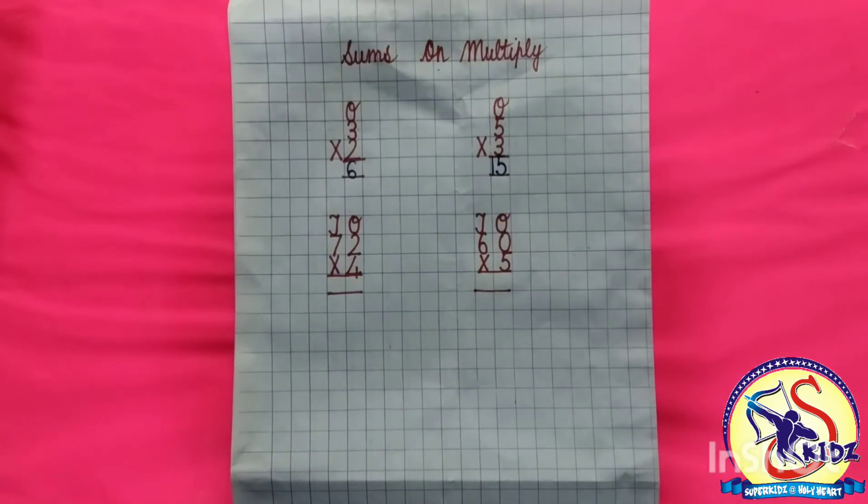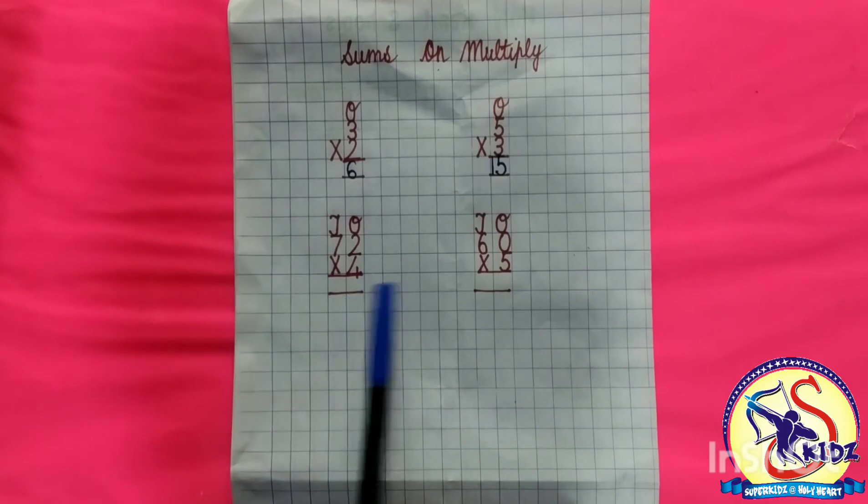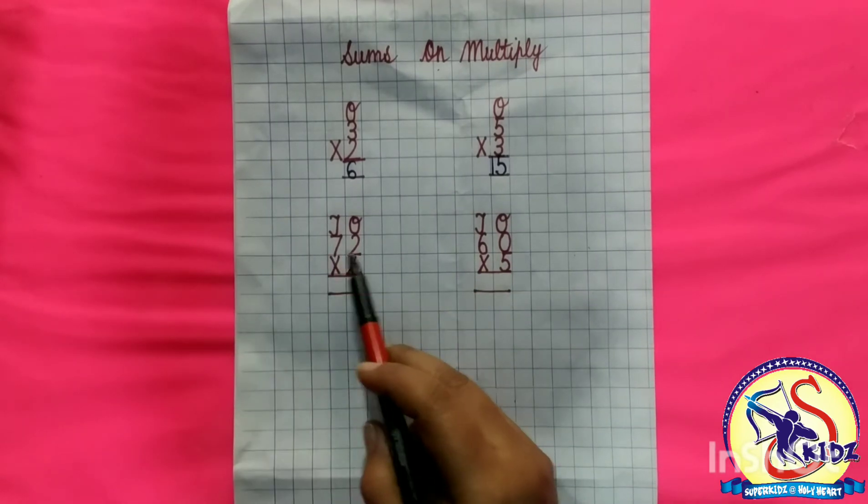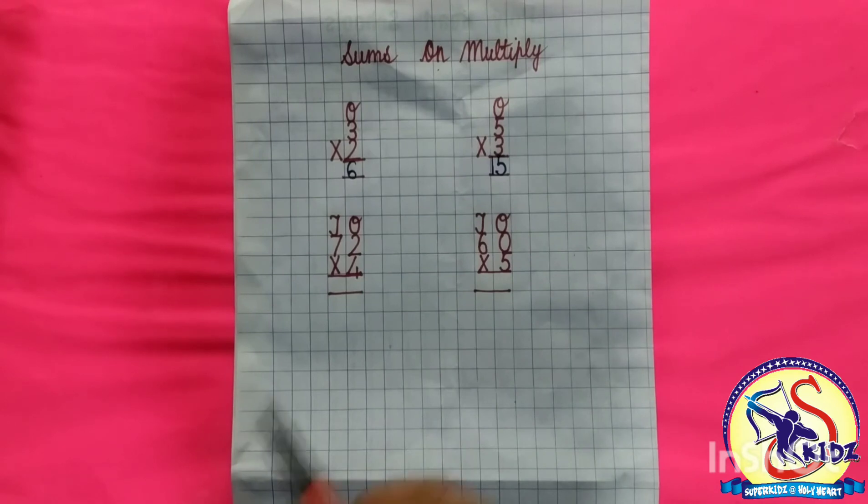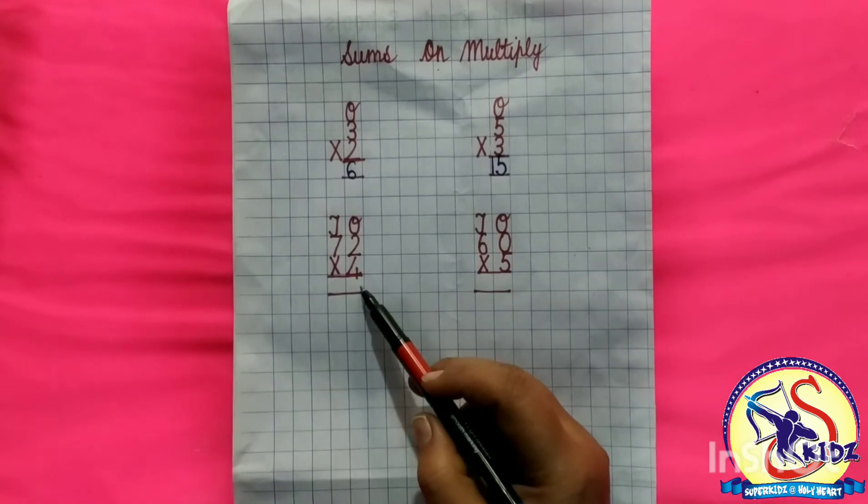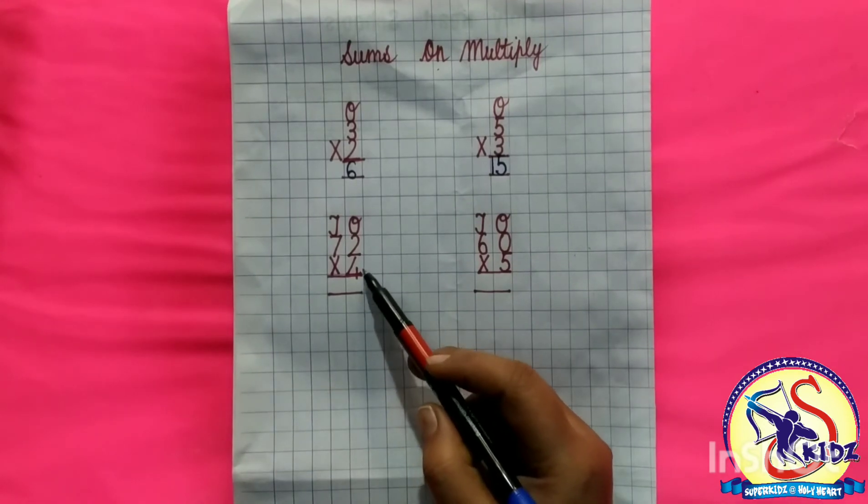Now we are going to do multiplication with double digit numbers. Here we have taken two numbers, 72, with sign of multiply. Which number is written here? Number 4.